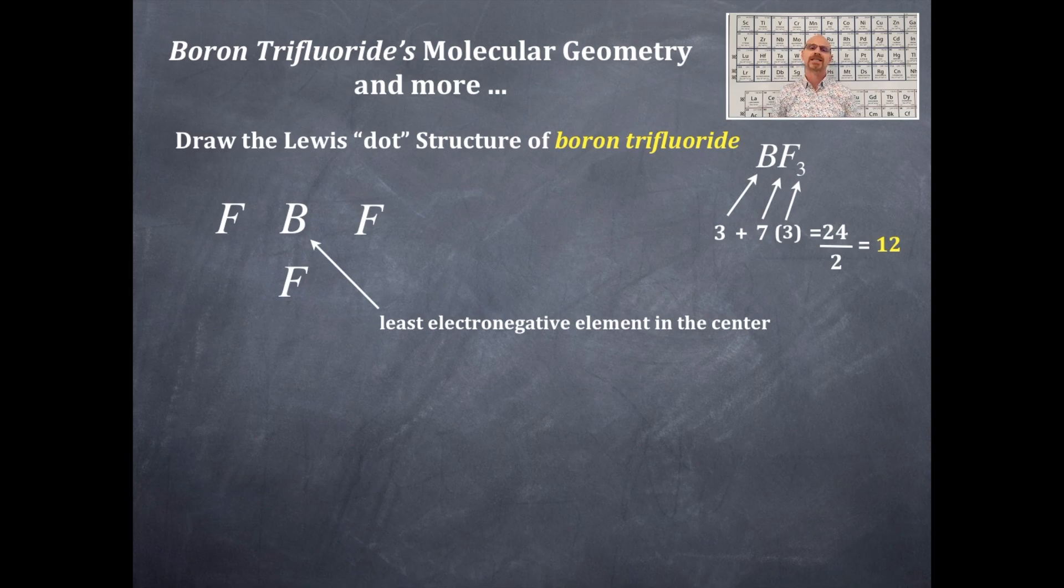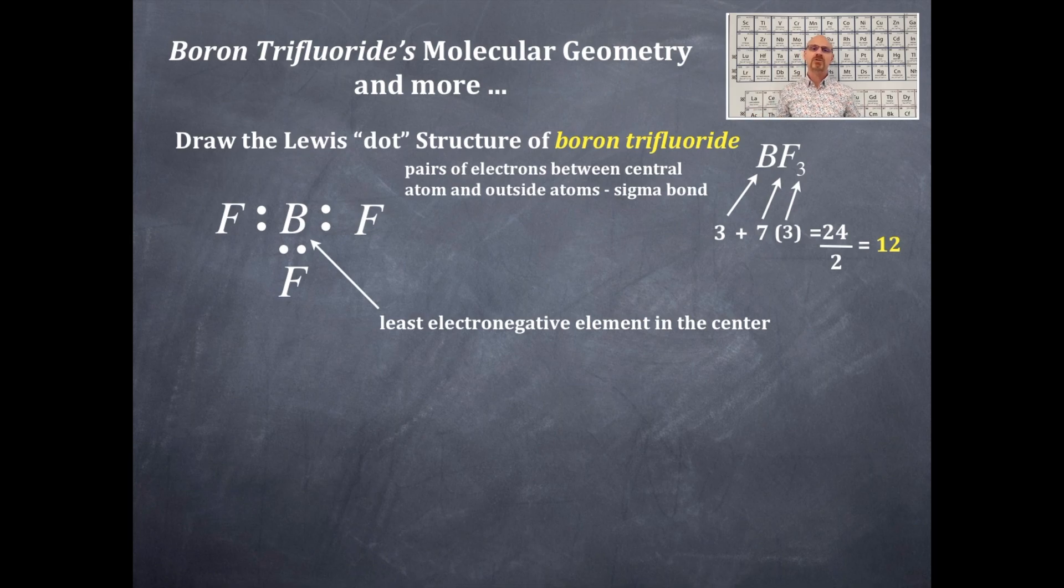Now we're gonna take those 12 pairs of electrons and spread them out according to the Lewis dot structure rules. That first rule is to place a pair of electrons between the central element and the outside elements. That's what I've done right there. I still have more electrons so I'm gonna now place pairs of electrons on the outside elements and that's done right there.